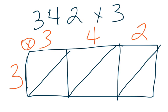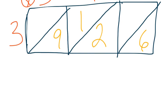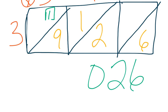3 times 3 is 9. 3 times 4 is 12. 3 times 2 is 6. Let's scroll up. Remember, we add going down. So 6, 2, 9. 9 plus 1 is 10. So bring down my 0. Regroup my 1 over to here. And then bring my 1 down. 1,026 is my final product.